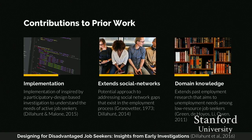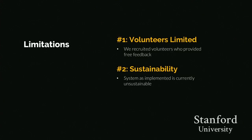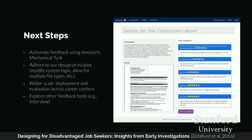In this work, we contributed Review Me — a digital employment tool inspired by participatory and user-centered design — which aims to address the social network gaps that exist in the employment process among these populations. The system has limitations: we had to recruit volunteers providing feedback free of charge, which is not sustainable long-term. Going forward, we plan to automate resume feedback using Amazon Mechanical Turk, adhere to our design principles, aim for wider scale deployment across career centers, and explore other feedback tools such as interview feedback.